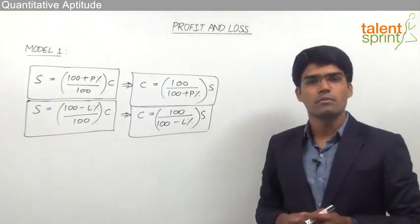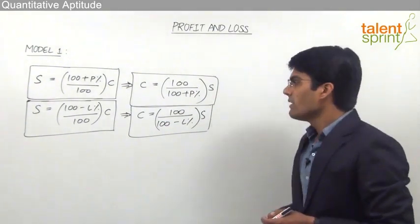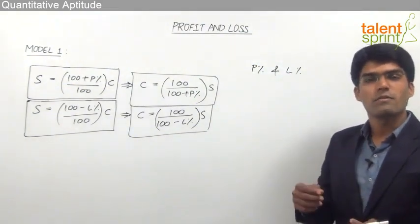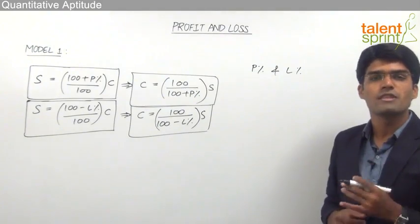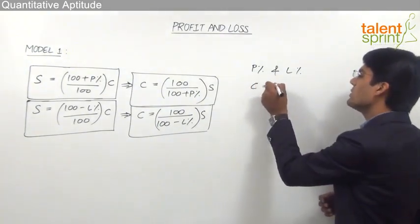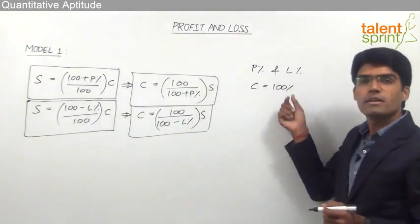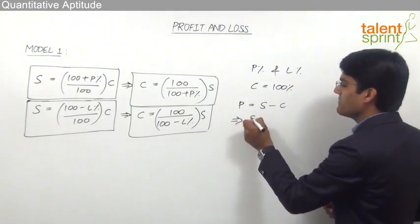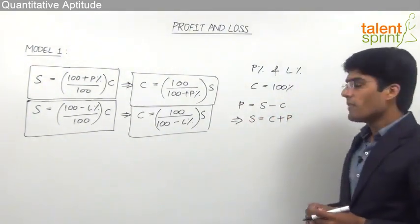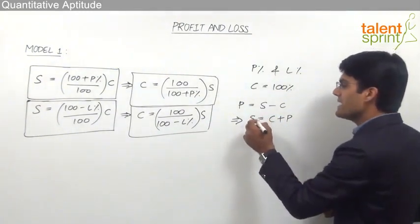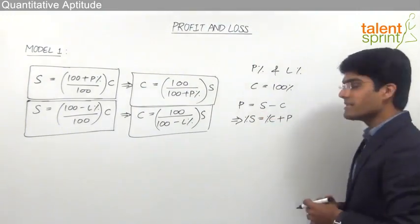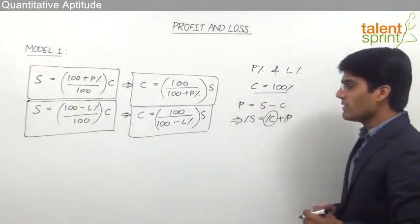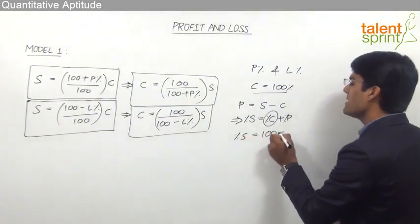Let us now understand the working behind these formulas so that solving the questions becomes even easier. We know that profit percentage and loss percentage both are calculated on cost price. That means cost price is always treated as the base value and hence should always be taken as 100%. So whatever be the value, cost price should always be equated to 100%. From the basic formula, profit = S − C, so selling price S = cost price + profit. Writing this as a percentage equation, selling price% = cost price% + profit%. Since cost price% is always 100, the percentage of selling price = 100 + profit%.